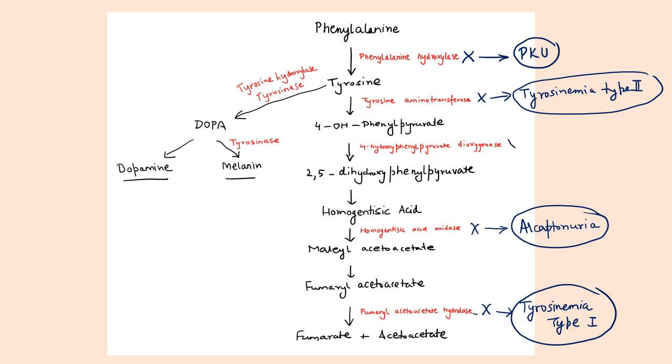Deficiency of tyrosine aminotransferase leads to tyrosinemia type 2. Deficiency of dioxygenase enzyme leads to tyrosinemia type 3. Finally, deficiency of tyrosinase enzyme. Tyrosinase is responsible for conversion of DOPA into melanin. When tyrosinase is not present, melanin will not form. So deficiency of tyrosinase leads to albinism.